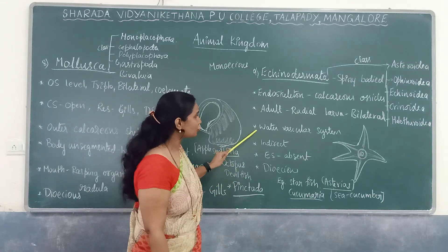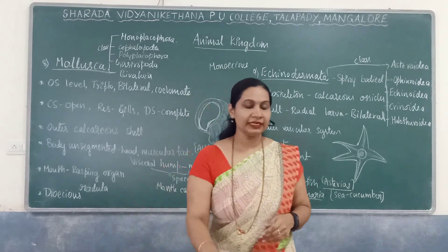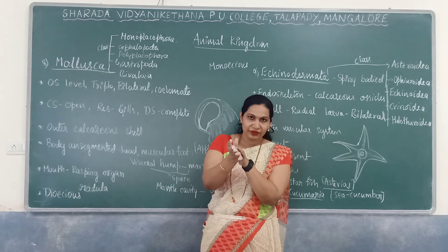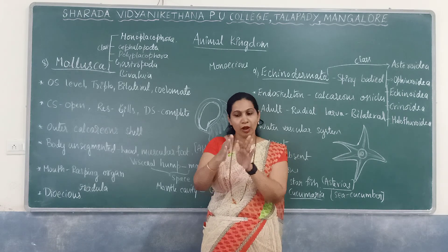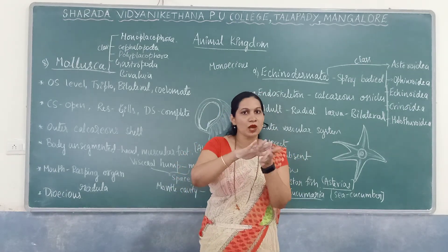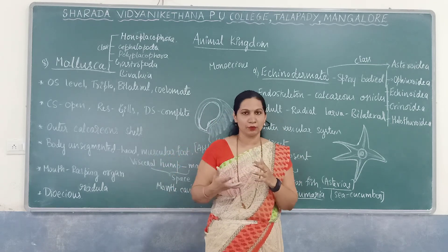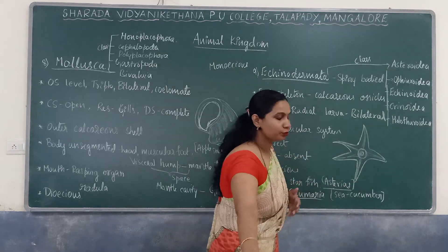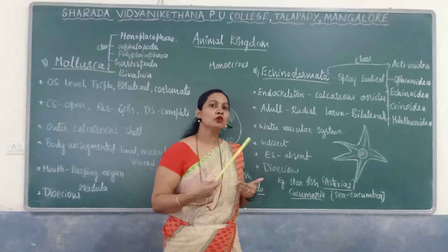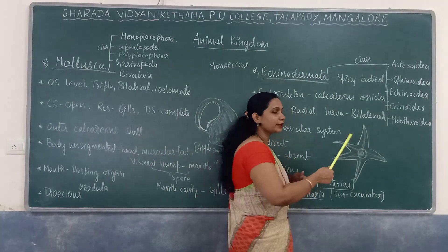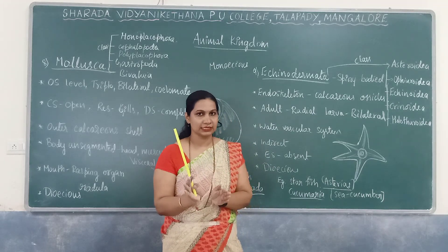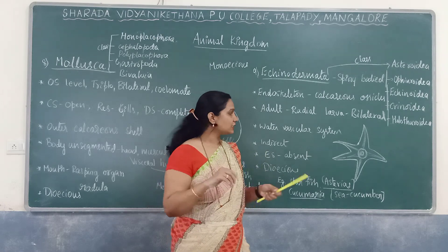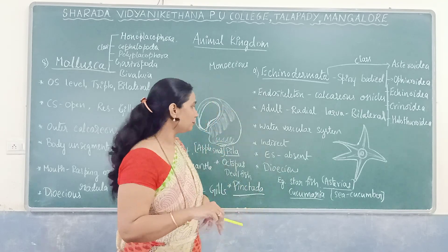A special structure of echinodermata is the water vascular system. Starfish has two surfaces: oral (lower, with mouth) and aboral (upper, with anus). Water enters through the mouth, moves towards the arms, and reaches tube feet — structures that help in locomotion and respiration. Waste substances are eliminated through the anus. There is no separate excretory system.